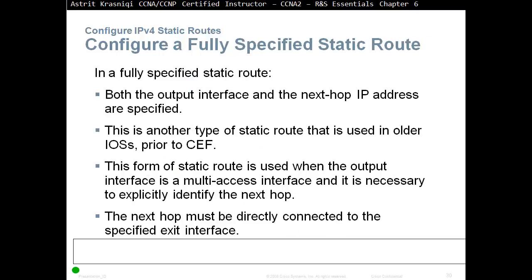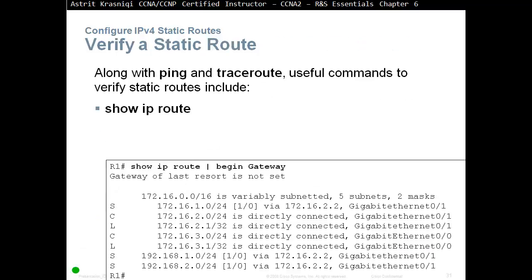The third method to configure a static route is a fully specified static route. Both the output interface and the next hop IP address are specified. This is used in older IOS prior to CEF, and when the output interface is a multi-access interface and it's necessary to explicitly identify the next hop. The next hop must be directly connected to the specific interface. So: ip route, destination network address, destination subnet mask, exit interface, and neighbor's IP address. To verify, we do 'show ip route' and we can see all three static routes with administrative distance of 1.